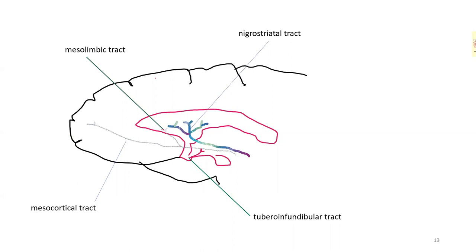We also have the nigrostriatal tract, which is responsible for extrapyramidal function, and then the tuberoinfundibular pathway, which controls prolactin release.